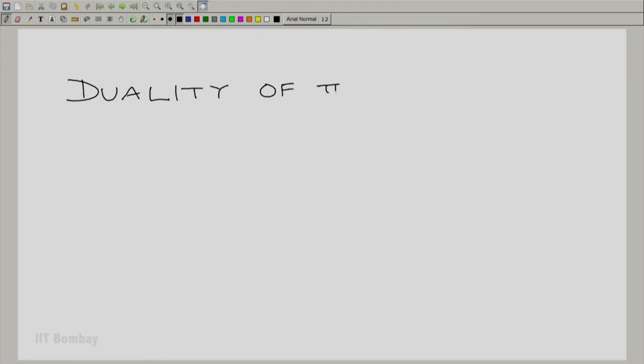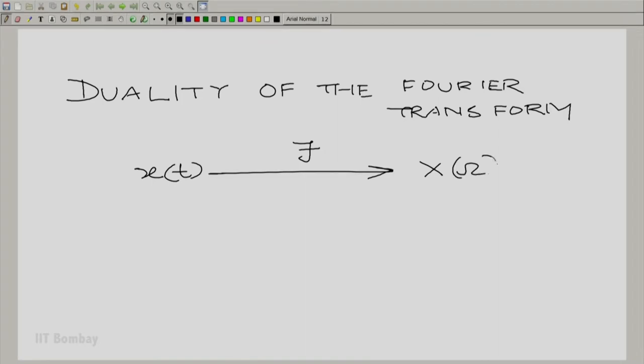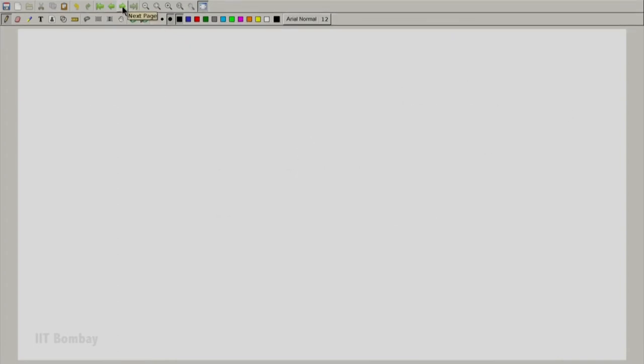Let us first review the duality that we had learnt last time. We have talked about duality in the Fourier domain. Specifically, what duality said was that if you had x(t) with a Fourier transform X(ω), then X treated as a function of t has the Fourier transform 2π·x evaluated at -ω.